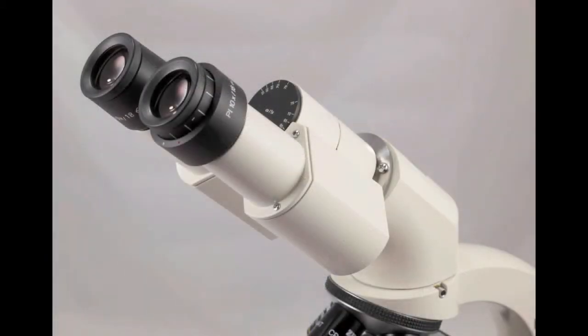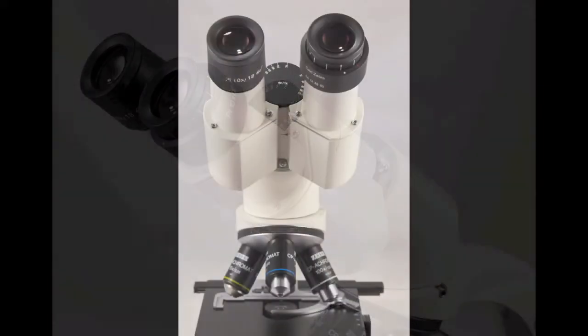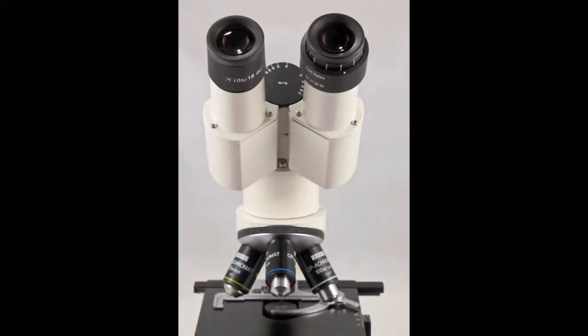The KF2 is a binocular microscope with two eyepieces. You can adjust the width of the eyepieces by grasping the binocular tubes and twisting them up or down, similar to the procedure with binoculars.